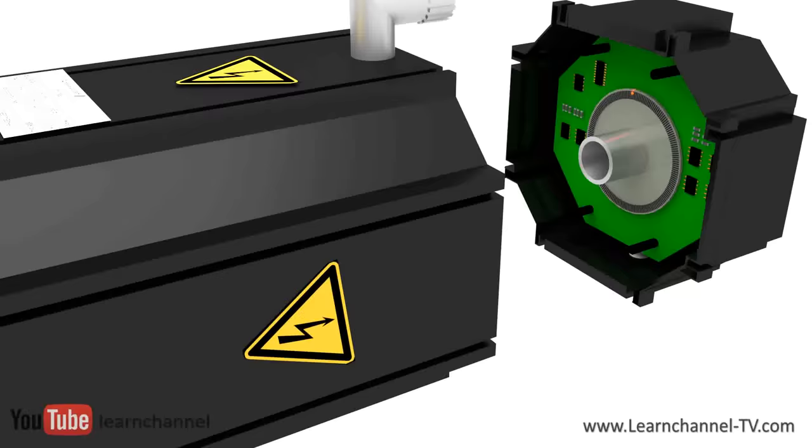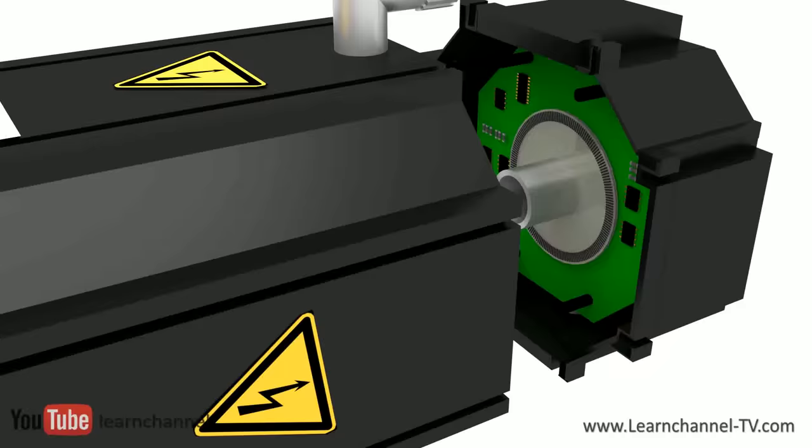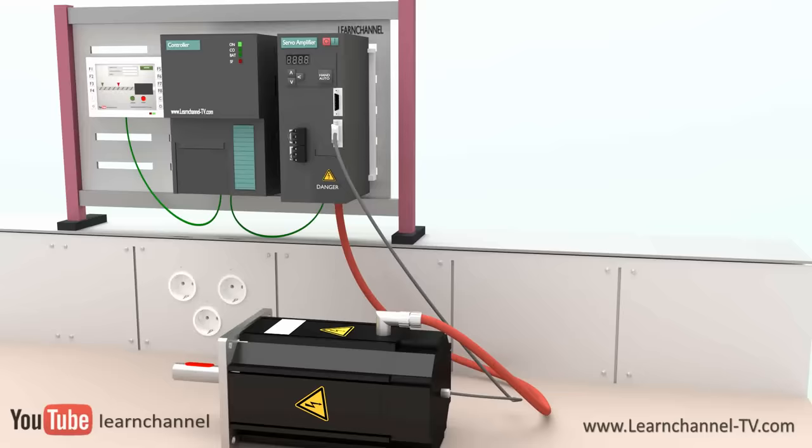In this case, you see an incremental encoder. This sensor device gives feedback to a controller to keep, for example, the rotational speed or torque constant, or to reach the target position as fast as possible.